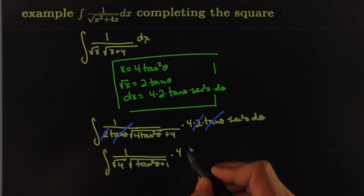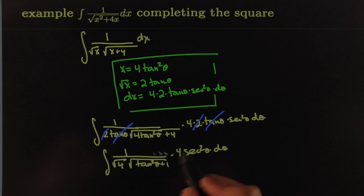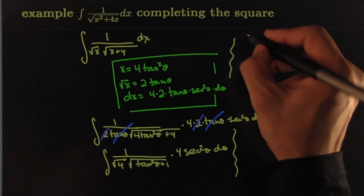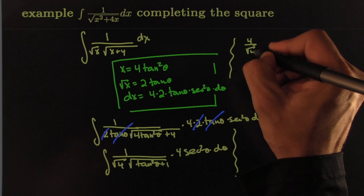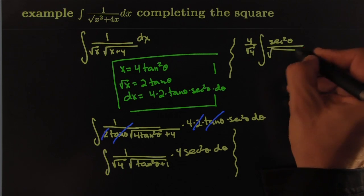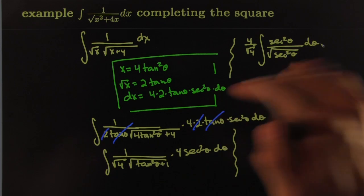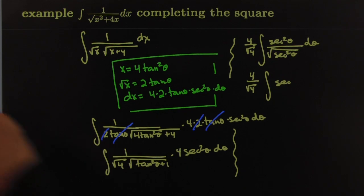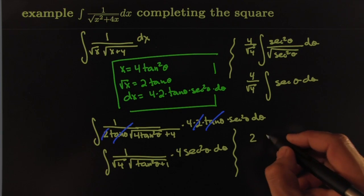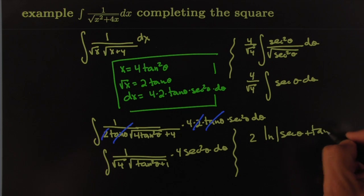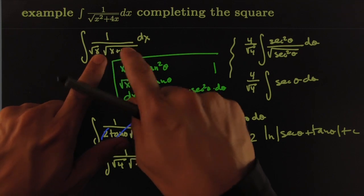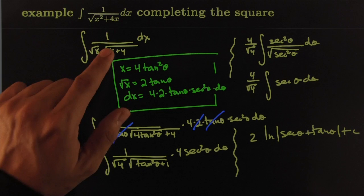After reducing — the 4 over √4 gives a factor of 2, and tan²θ + 1 = sec²θ — we get sec²θ all over √(sec²θ) dθ, which simplifies to ∫ secθ dθ. That's the famous ln|secθ + tanθ| + C. The key idea: turning a binomial into a monomial under the square root, because square roots play really well with monomials. That's it — see you next time!